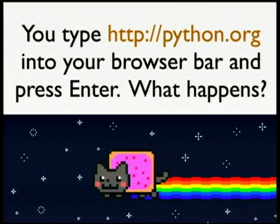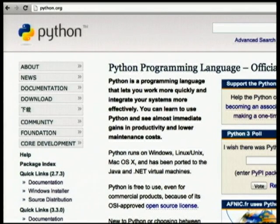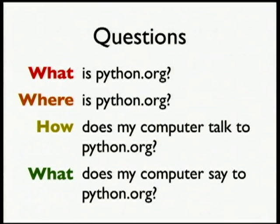Here's the question I would like us all to be able to answer today. You're at home, you pull up Firefox, you type http://python.org into your browser bar and press enter. What actually happens at a networking level to get the Python homepage displayed on your screen?